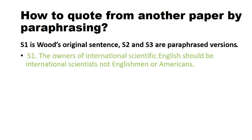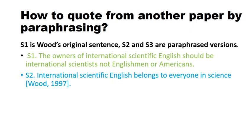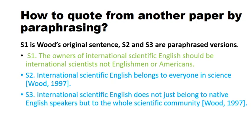Now let's see exactly how to paraphrase with examples. S1 is the original sentence; S2 and S3 are paraphrased versions. Original: 'The owners of International Scientific English should be International Scientists, not Englishmen or Americans.' This can be paraphrased as: 'International Scientific English belongs to everyone in science.' Another version: 'International Scientific English does not just belong to native English speakers, but to the whole scientific community.' You must give a citation within the bracket with the author name and year of publication.